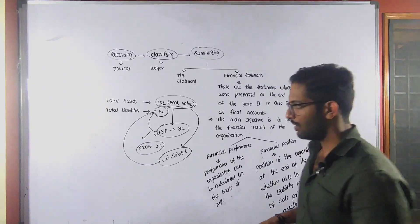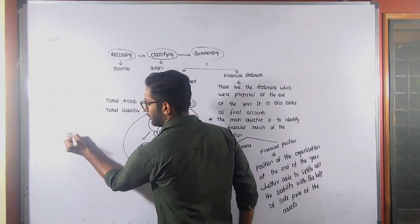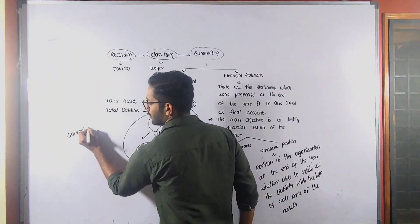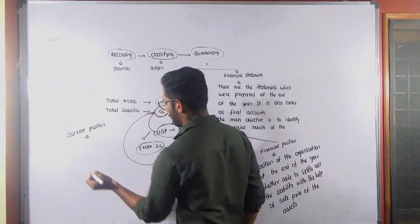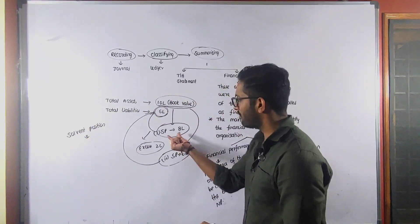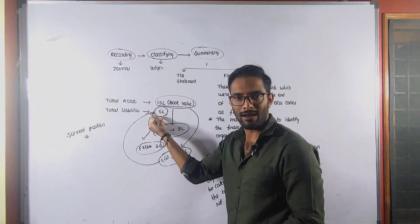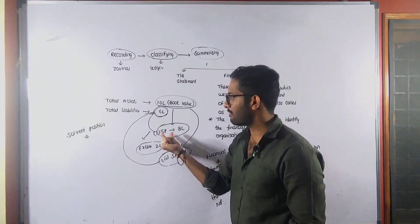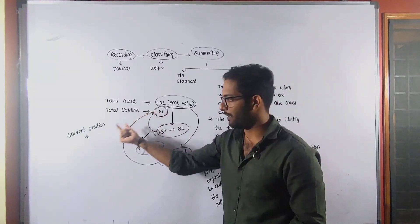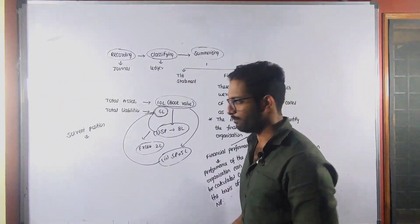In case we have sufficient funds available to settle the liabilities, then we call it a solvent position. Solvent position means the sale price of the assets is greater than liabilities — that we can call solvent position.